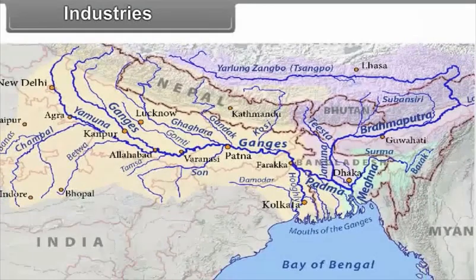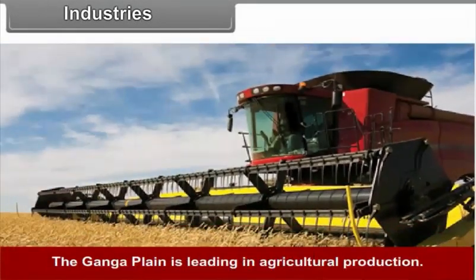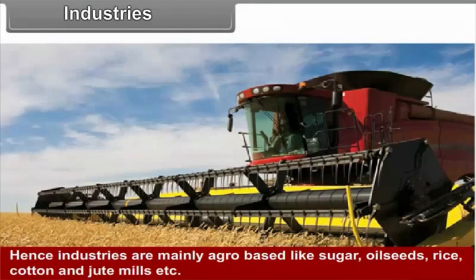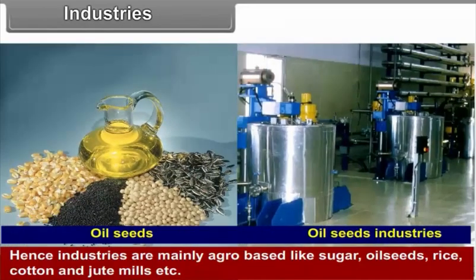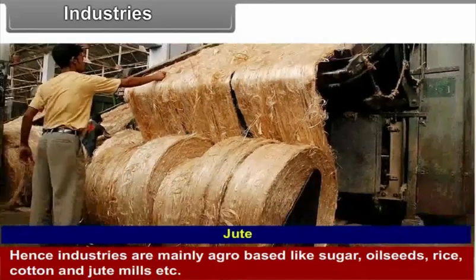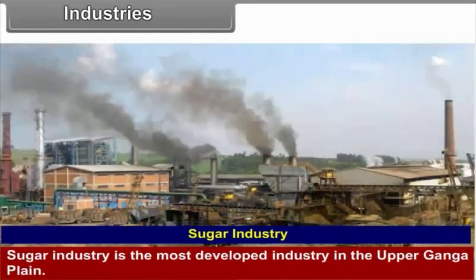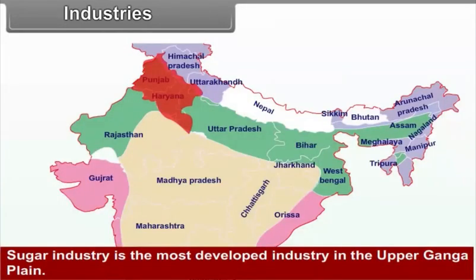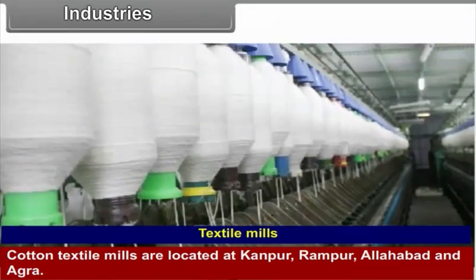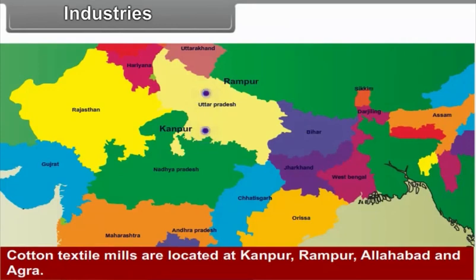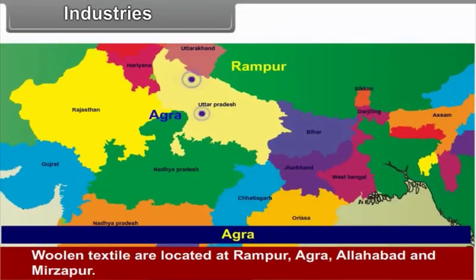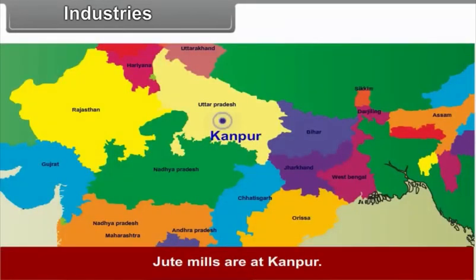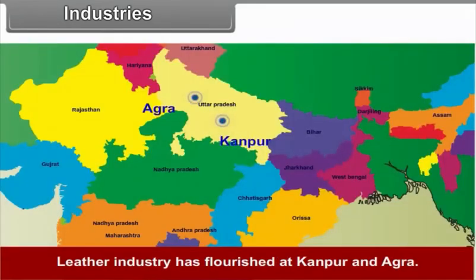Industries. The Ganga plain is leading in agricultural production; hence, industries here are mainly agro-based like sugar, oilseeds, rice, cotton and jute mills, etc. Sugar industry is the most developed industry in the upper Ganga plain. Cotton textile mills are located at Kanpur, Rampur, Allahabad and Agra. Woolen textiles are located at Rampur, Agra, Allahabad and Mirzapur. Jute mills are at Kanpur. Leather industry has flourished at Kanpur and Agra.